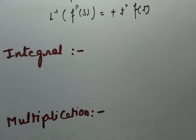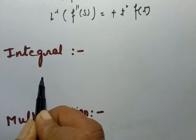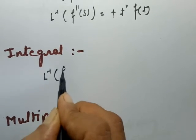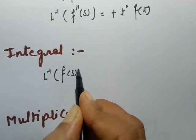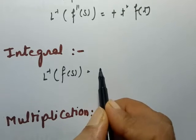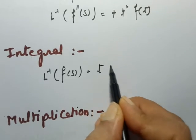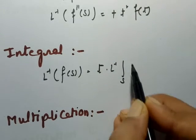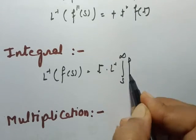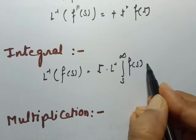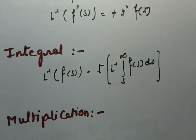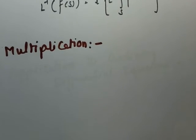The next one is integrals. If you want to find the inverse Laplace transform involving an integral of F(s), the formula to use is: t times inverse Laplace transform of the integral from s to infinity of F(s) ds. This is the formula for finding the inverse Laplace transform of integrals.